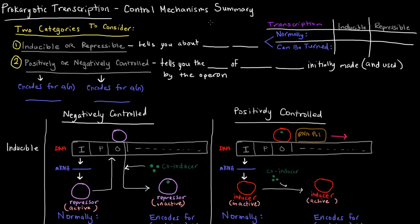In this video, I want to summarize the control mechanisms of prokaryotic transcription. There are usually two categories to consider when thinking about how a system is controlled: the first is whether it's inducible or repressible, and the second is whether it's positively or negatively controlled.